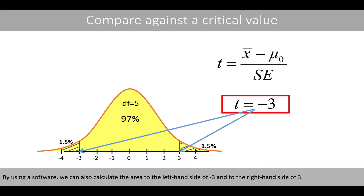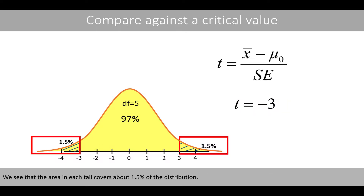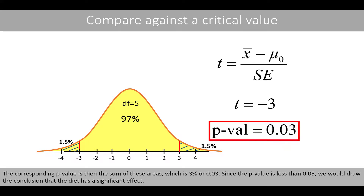By using software, we can also calculate the area to the left-hand side of negative 3 and to the right-hand side of positive 3. We see that the area in each tail covers about 1.5% of the distribution. The corresponding p-value is then the sum of these areas, which is 3%, or 0.03. Since the p-value is less than 0.05, we would draw the conclusion that the diet has a significant effect.